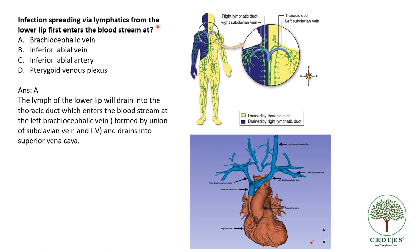Infection spreading via lymphatics from the lower lip first enters the bloodstream at? There are two major lymphatic drainages — from the right side it drains into the right lymphatic duct, and the rest drains into the thoracic duct. The lower lip drains ultimately into the thoracic duct, which then drains into the left brachiocephalic vein, formed at the union of the subclavian vein and the internal jugular vein. So the answer is the brachiocephalic vein.